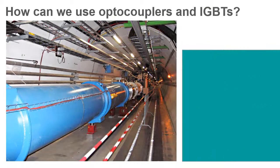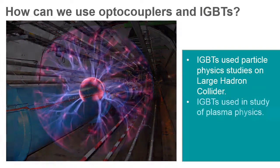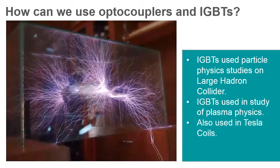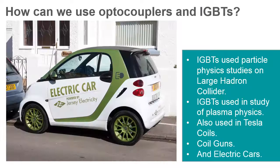IGBTs can be found anywhere high-power signals need to be controlled. Their extremely high pulse ratings make them useful for generating large power pulses required in the study of both particle and plasma physics. Hobbyists use IGBTs for controlling large amounts of power required to drive devices like Tesla coils and coil guns. IGBTs are also critical components in the control circuits for hybrid and electric vehicles.